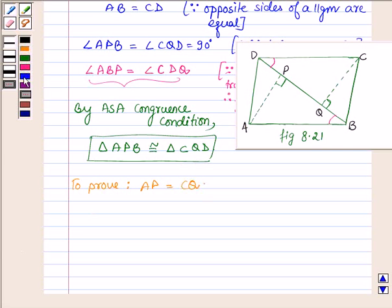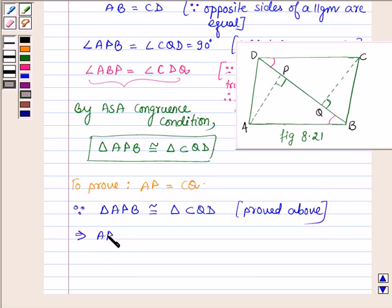Now since triangle APB is congruent to triangle CQD as we have proved, this implies AP is equal to CQ by CPCT, that is, corresponding parts of congruent triangles are equal.